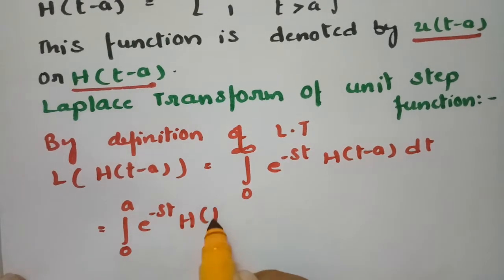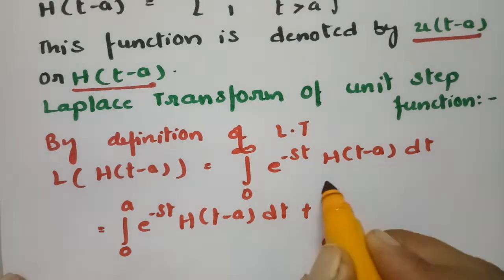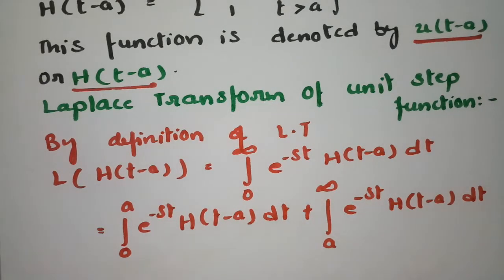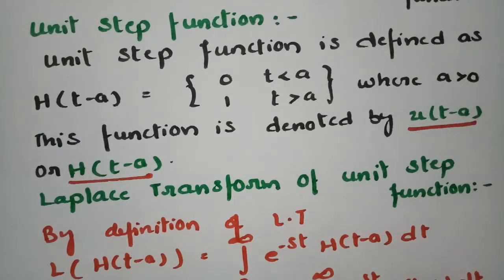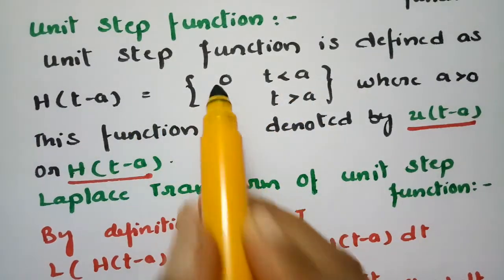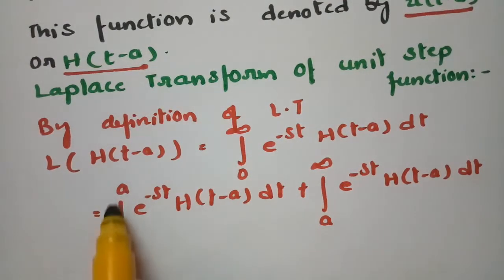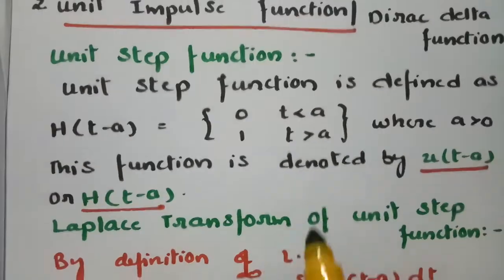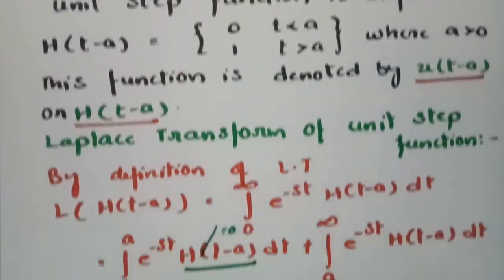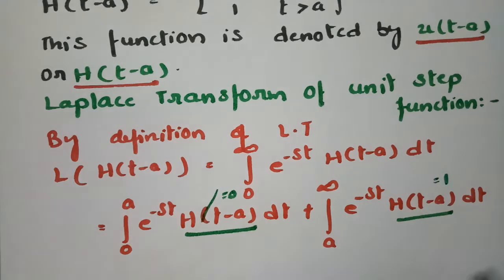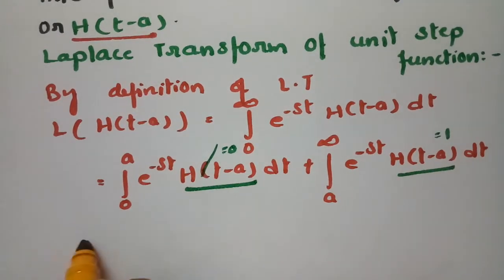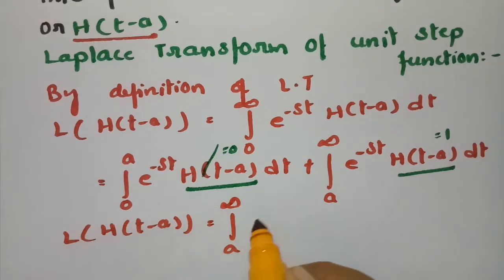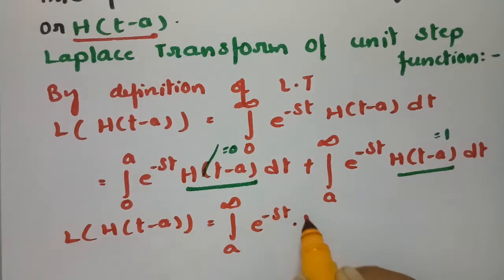As defined in the function, if T is less than A, the Heaviside function value is 0. So if T is between 0 and A, this value will be 0. If T is greater than A, the Heaviside function is defined as 1, so this value equals 1. Therefore, the Laplace transformation of H(T − A) reduces to the integral from A to infinity of e^(−ST) · 1 · dt.